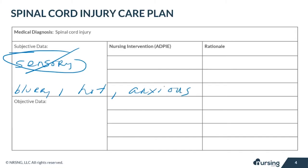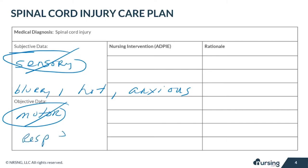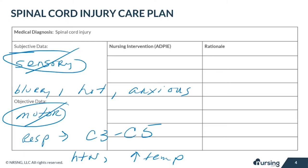Objective or measurable data includes loss of motor function below the level of the injury. Also, respiratory distress — especially if the injury is high, between C3 and C5. Autonomic dysreflexia objective data includes severe hypertension, bradycardia, increased temp, flushed skin, and even seizures. Neurogenic shock could also occur, and with this we would see hypotension, bradycardia, increased temp, and flushed skin.